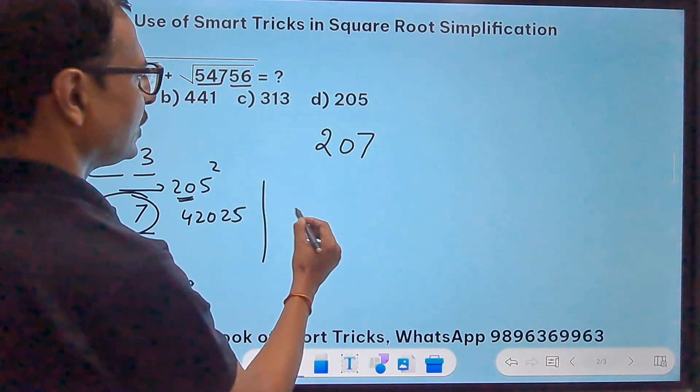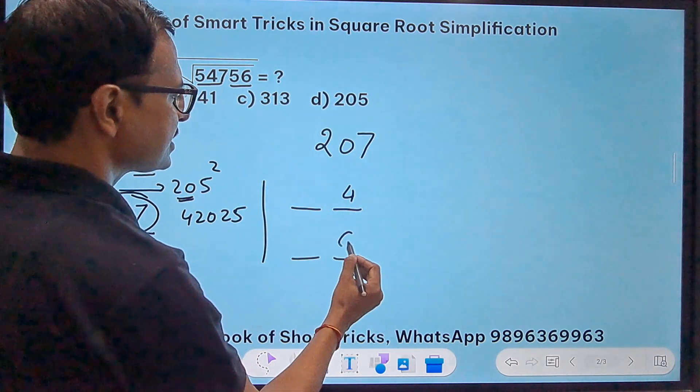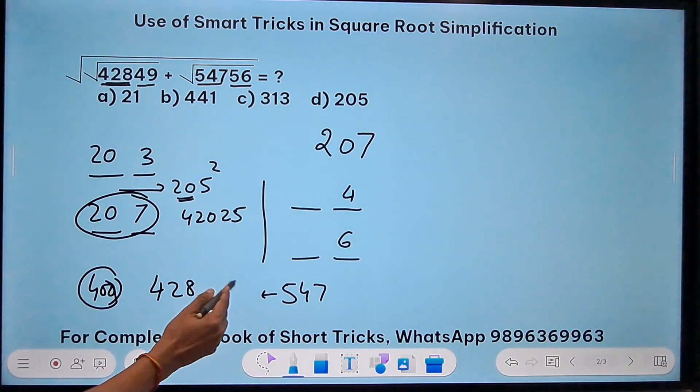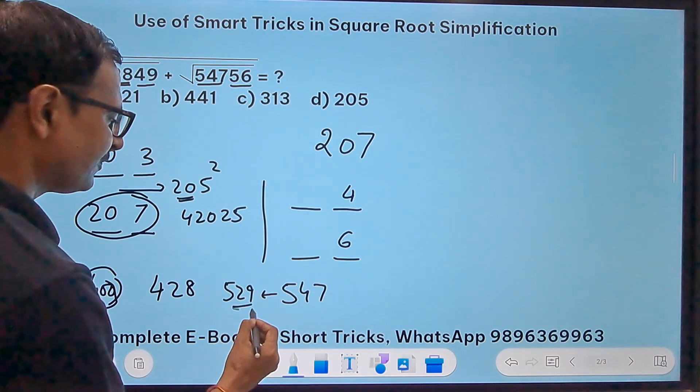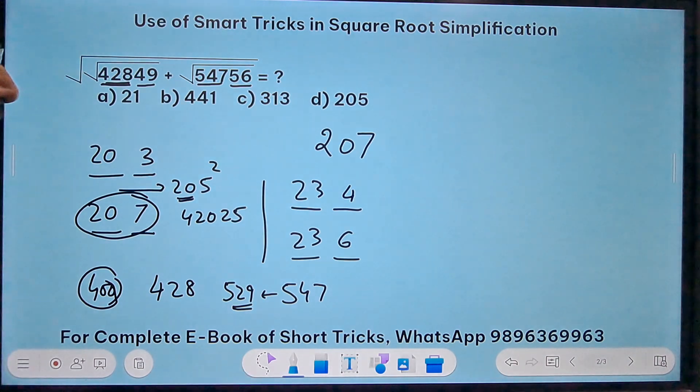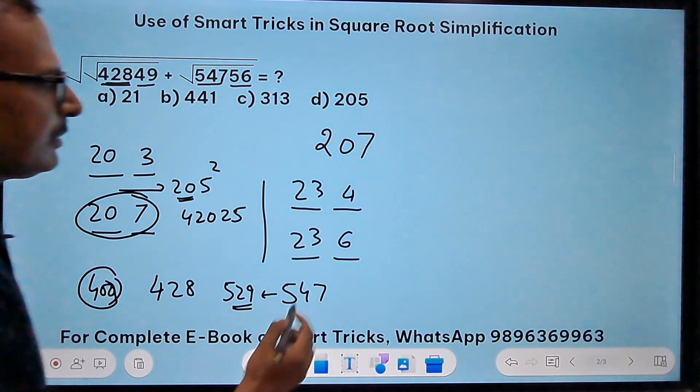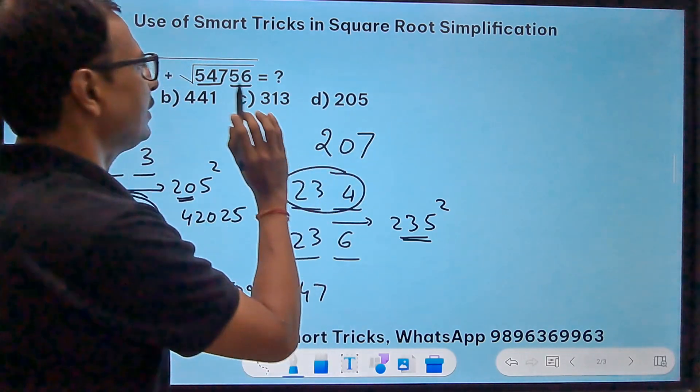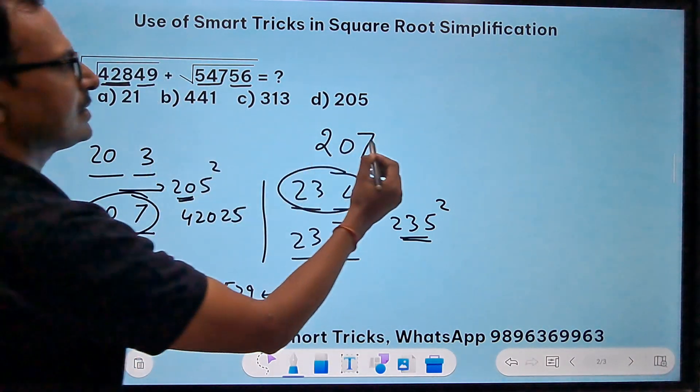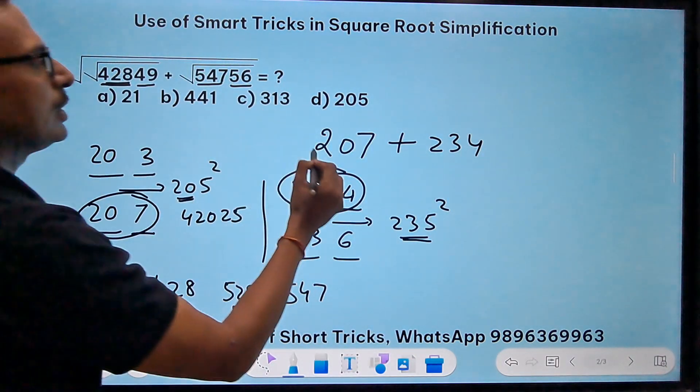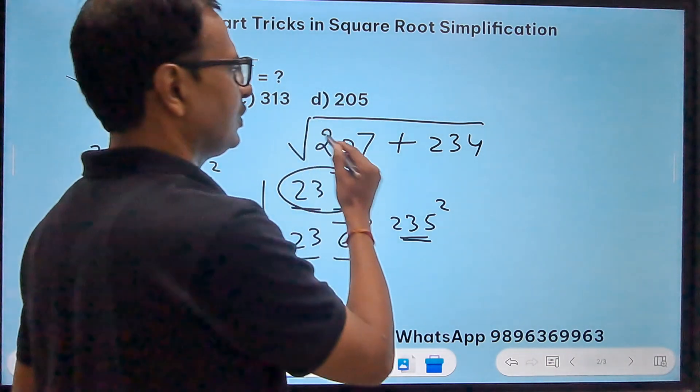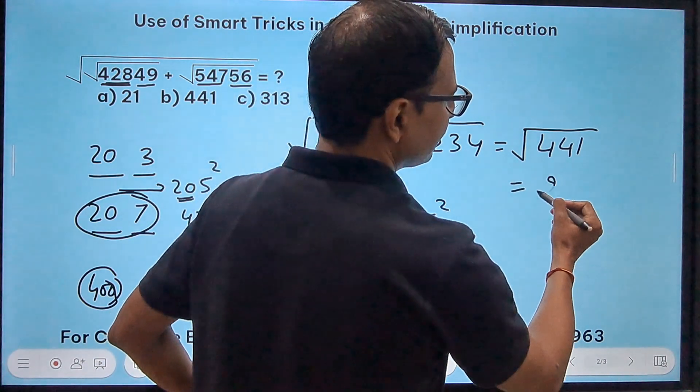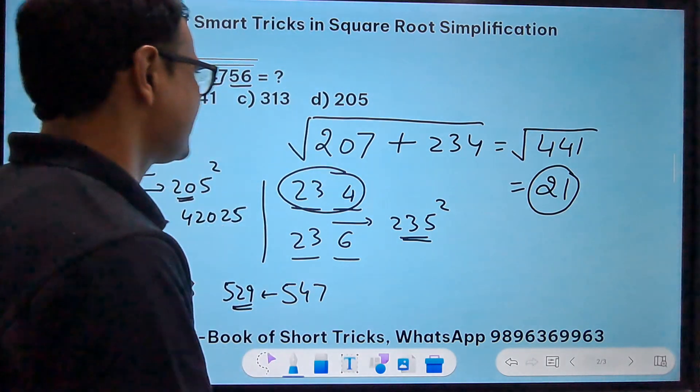Now the second part. 54756. Ending in 6 means either ending in 4 or ending in 6 itself. So now I have 547. Which one is the closest square? 22, 484. 23, 529, right? So 23 and 23. So either 234 or 236. Now you can perform the same task taking the intermediate number 235 square and comparing it with this number. You will find that 234 is the perfect answer for the second part. So in between we have plus here. So this becomes plus 234, and then we have a square root which comes like this. So your answer will be square root of what? This is 441. 21 square is 441 and your answer for the question is 21. See friends, finding this square root, that is the trick here, and if you can do that mentally, wonderful.